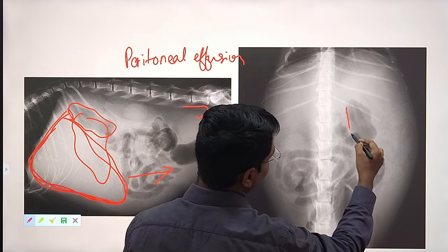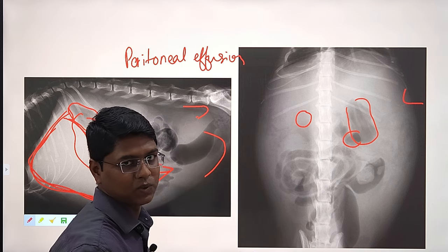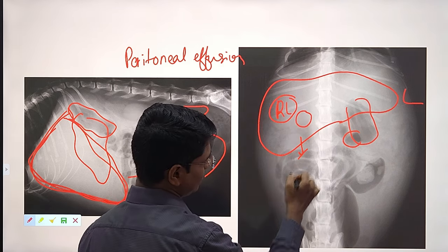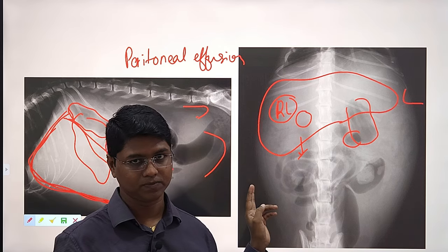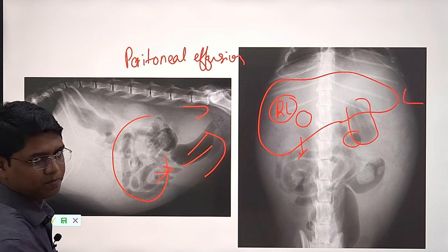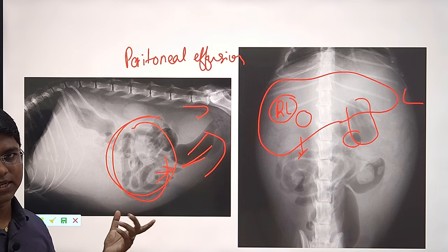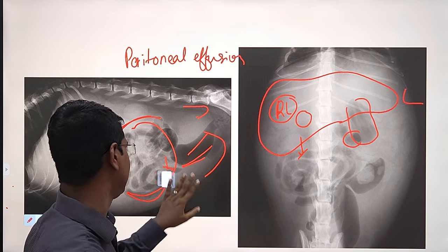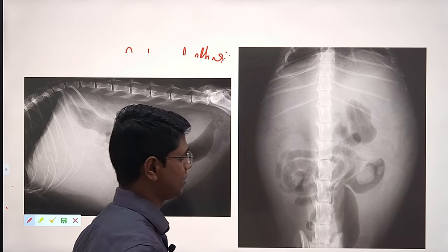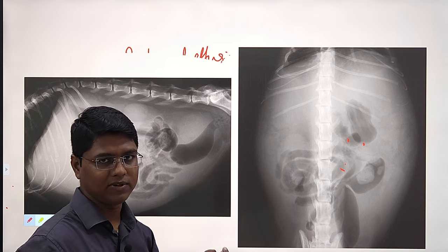In radiographs, you are supposed to interpret findings, not diagnose the disease. You can only tell that hepatic enlargement is present — whether it is due to infectious canine hepatitis or any other cause, you cannot tell that from the radiograph. You have to interpret what your findings are only.